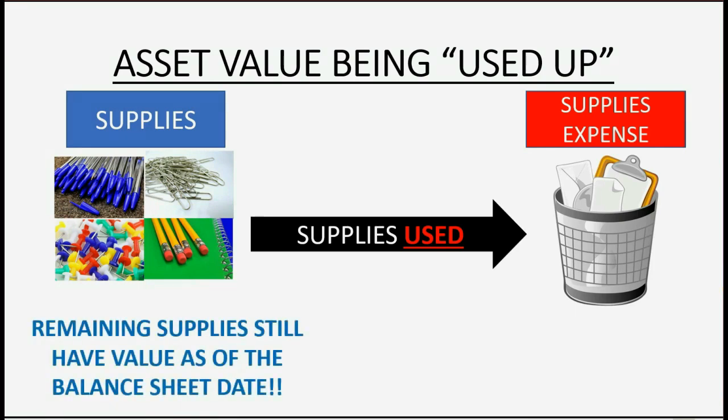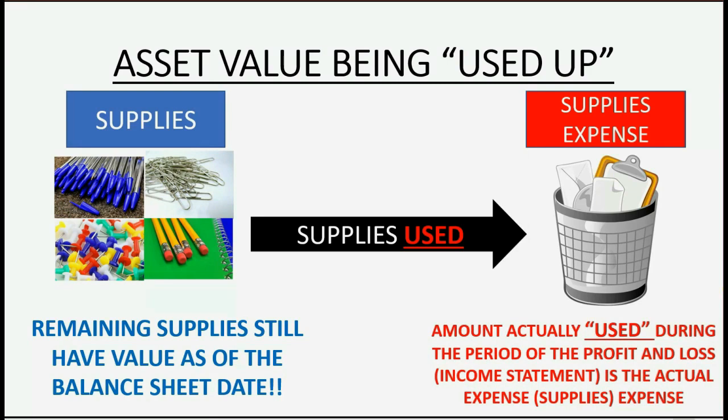The remaining supplies still have value as of the balance sheet date, so whatever you paid for the supplies you still have should be the balance of the asset account supplies at the end of the month. The amount you report as supplies expense is the actual amount used during the period of the income statement. This makes for accurate financial statements that give a true picture of what's happening in the business.